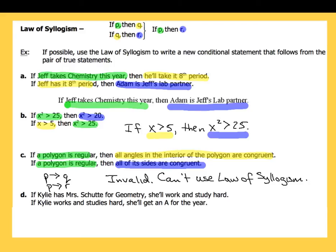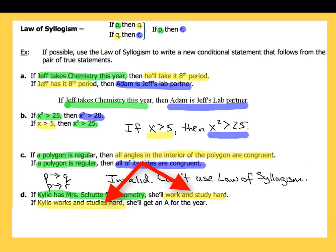We've got one more example for the law of syllogism. If you think you have it, go ahead and hit pause, highlight if you need to, and make the conclusion — or say invalid if you can't use the law of syllogism. Let's go through it together. First statement: if Kylie has Mrs. Shuddy for geometry — Mrs. Shuddy is one of my great friends, absolutely phenomenal — that's the hypothesis. The second statement starts off with if Kylie works and studies hard, which is the same as how the previous one ended.